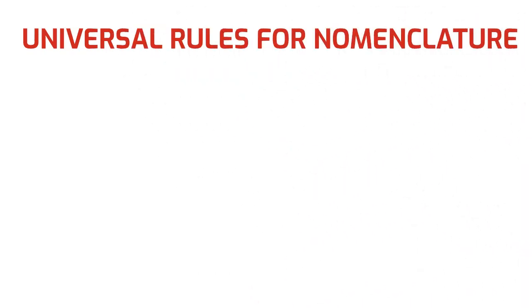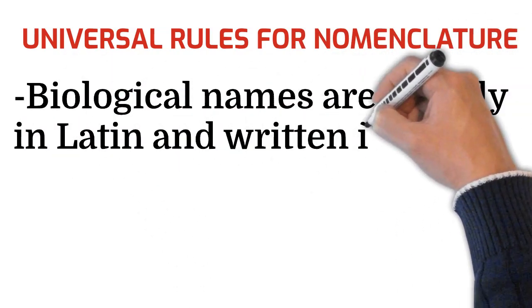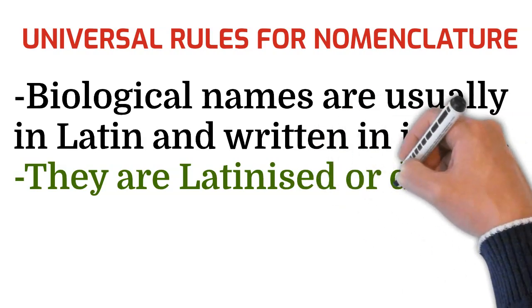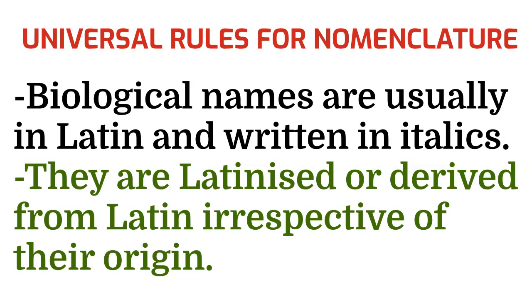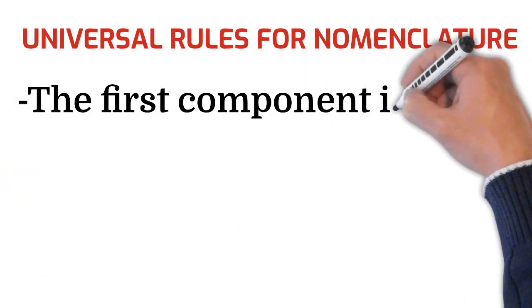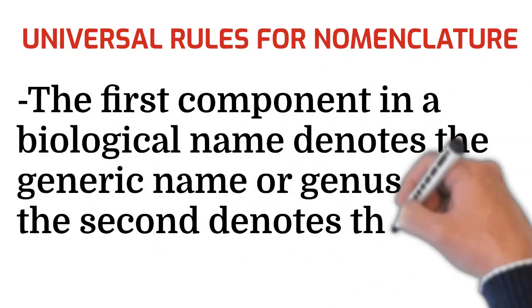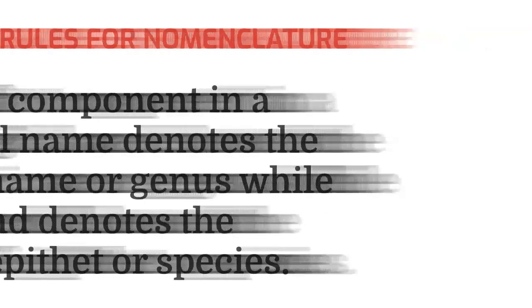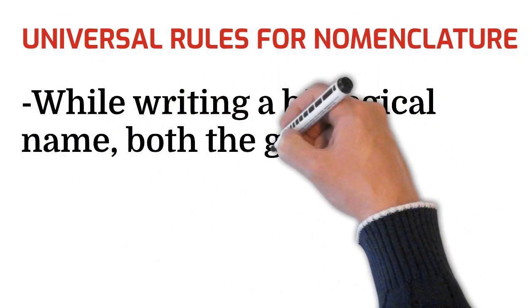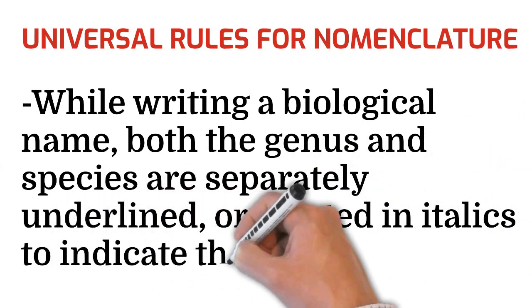Let's discuss the universal rules for nomenclature. Biological names are usually in Latin and written in italics. They are latinized or derived from Latin irrespective of their origin. The first component in a biological name denotes the generic name or genus, while the second denotes the specific epithet or species. When writing a biological name, both the genus and species are separately underlined or printed in italics to indicate their Latin origin.